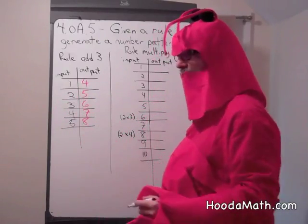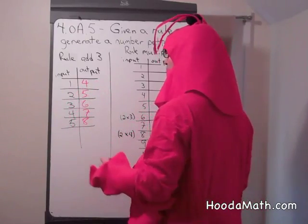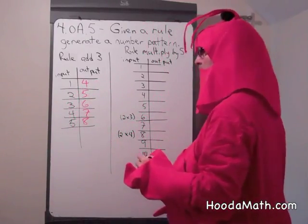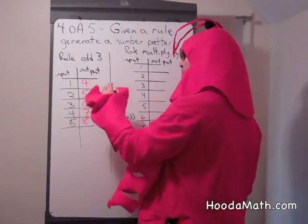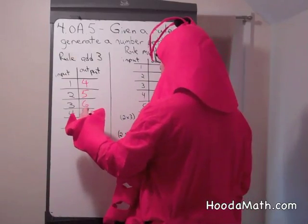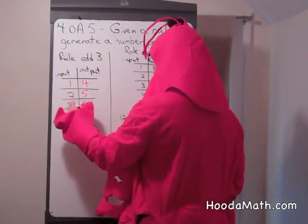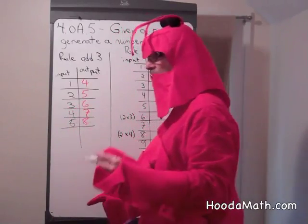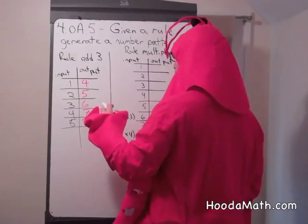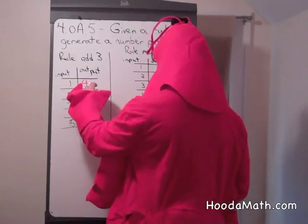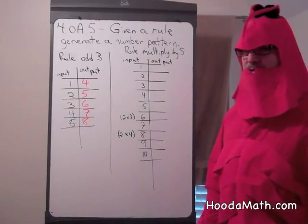Why does that happen? Because an even plus an odd gives us an odd, always. And an odd plus an odd always gives us an even — because think of it as two odds. Two times anything gives you even. That is our pattern.